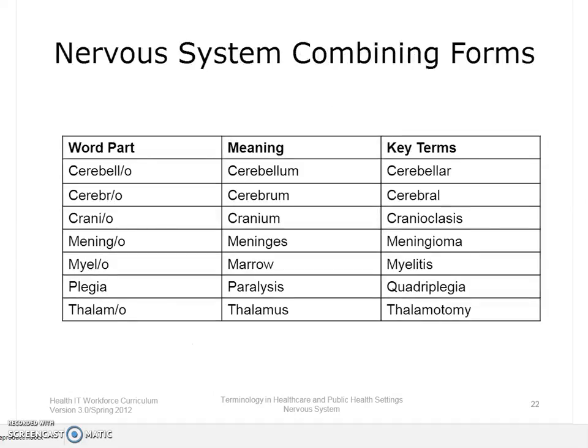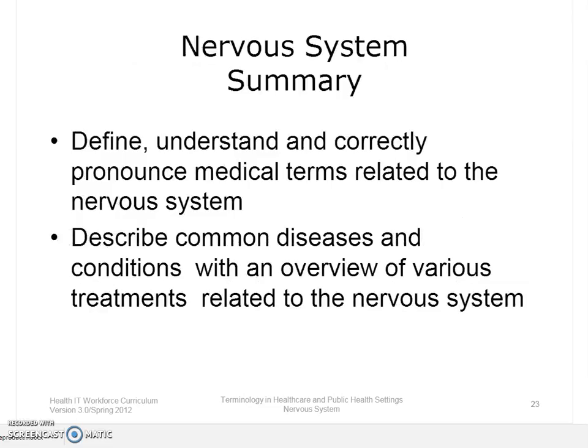Here are some additional key word parts for the nervous system, along with their meanings. In the third column, you can see some of the medical terms that we can create by combining word parts. You should return to the online medical dictionary to hear the pronunciation and become familiar with the meanings of the created terms. In summary, you should be able to describe and pronounce medical terms related to the nervous system, and describe common diseases and conditions with an overview of various treatments related to the nervous system.